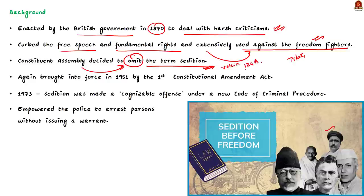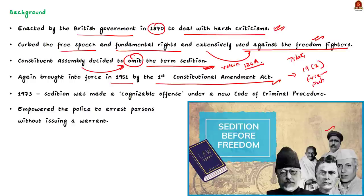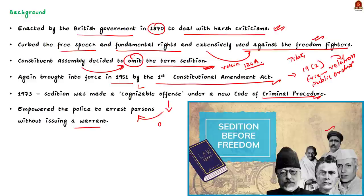Our national leaders and constitution makers decided not to include the word sedition in the original constitution, but they decided to retain Section 124A of IPC. However, this controversial law was again brought into force in 1951 by the first constitutional amendment act. In this amendment, the Nehru government included friendly relations with foreign states and public order as grounds for imposing reasonable restrictions on free speech under Article 19 clause 2. So the first constitutional amendment act implicitly legitimized sedition. Further, in 1973, sedition was made a cognizable offense under the new Code of Criminal Procedure, meaning police can arrest a person without any warrant.